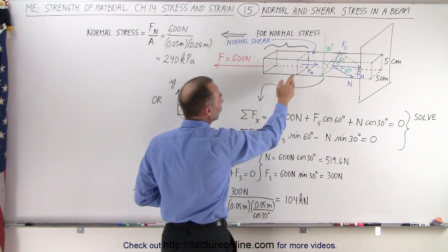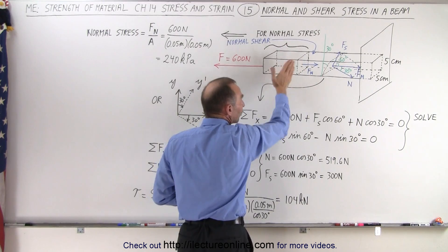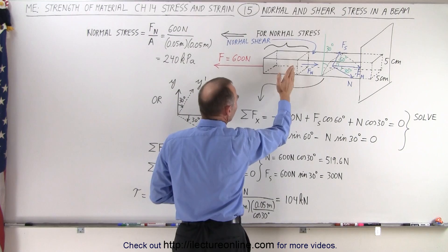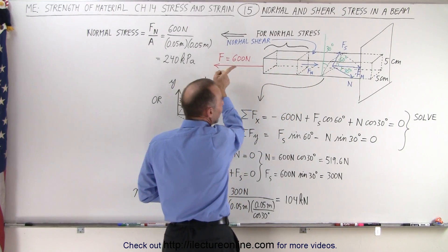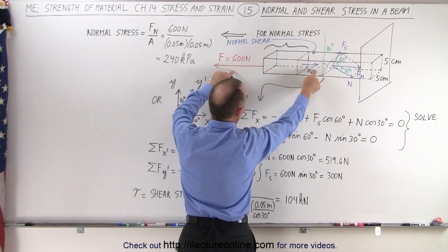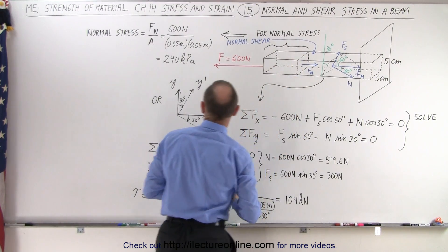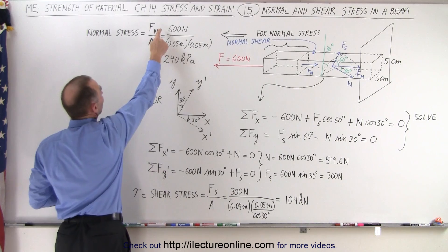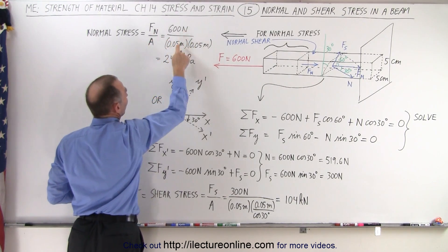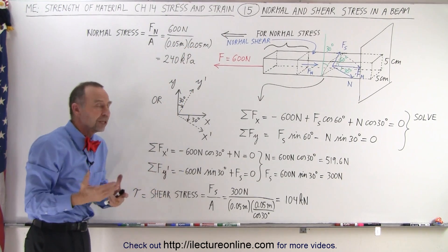If the cut is perpendicular to the cross-section area of the beam, then the stress here is what we call a normal stress. We have a force pulling one way and a normal force pulling in the opposite direction so that the two forces together add up to zero, which causes what we call a normal stress. The normal stress is defined as the normal force divided by the cross-section area — 600 newtons divided by 0.05 meters times 0.05 meters, which ends up being 240 kilopascals.